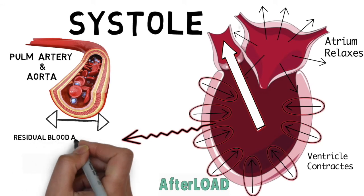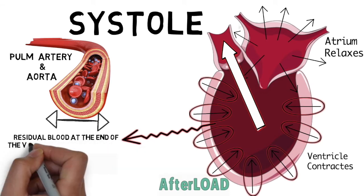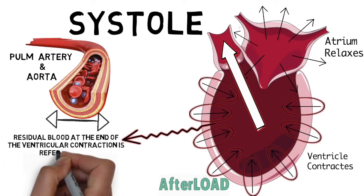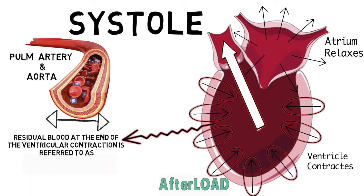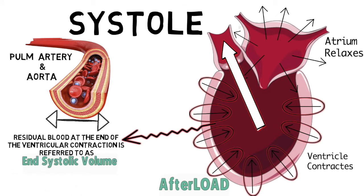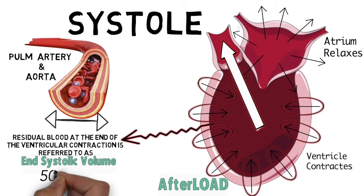Once the heart has fully contracted, there's always some residual volume left behind, and this residual volume is referred to as end systolic volume. The normal end systolic volume is about 50 ml.